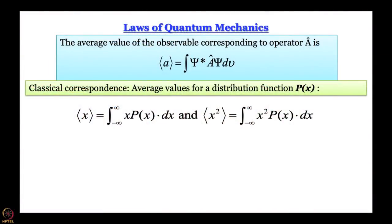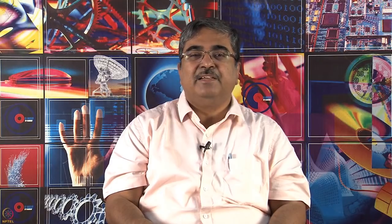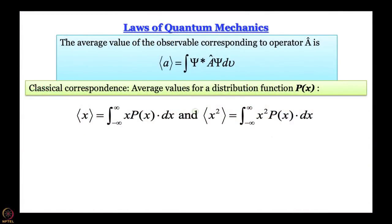This comes from classical correspondence. In classical mechanics, if you have a population distribution function p(x) — it can be anything: Gaussian, Lorentzian, two-sided exponential — then the average value of some variable x is given by x multiplied by the population distribution integrated over all space. Essentially, you take the population distribution, multiply it by x, and integrate over all space; the area gives you the average value. For x² or any arbitrary function f, the equation is the same.